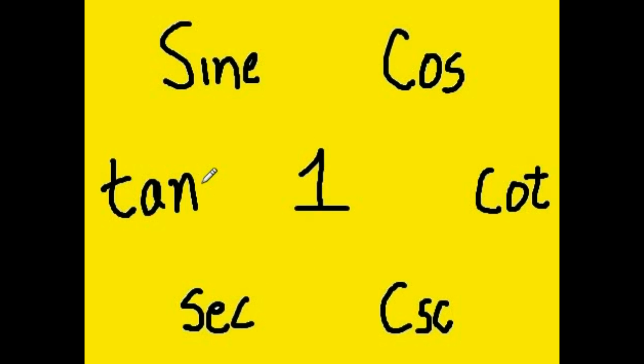Start with tangent and draw seven to one and down. Tangent squared plus one squared equals secant squared. Wow.